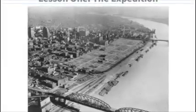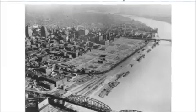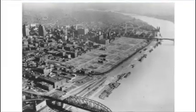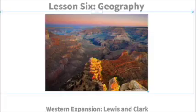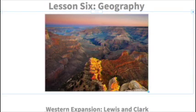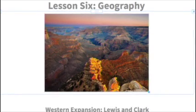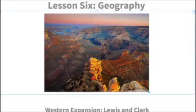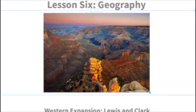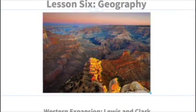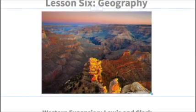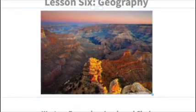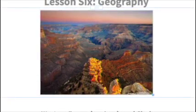Week one involved the expedition — the planning that went into the Lewis and Clark Journey West — and that's Old St. Louis right there that you're looking at. Lessons six through ten covered the geography of the western United States, including the Grand Canyon, the northern half of the United States, the northwestern region, and what it had to offer.